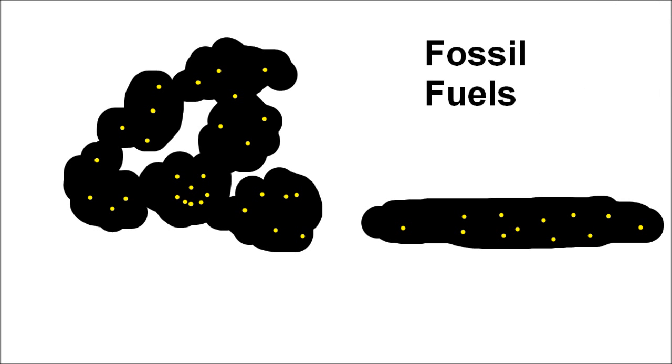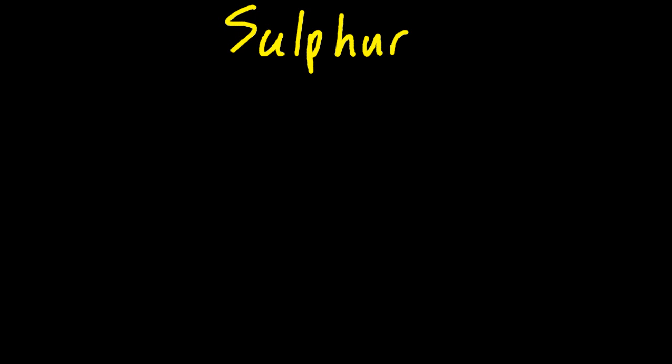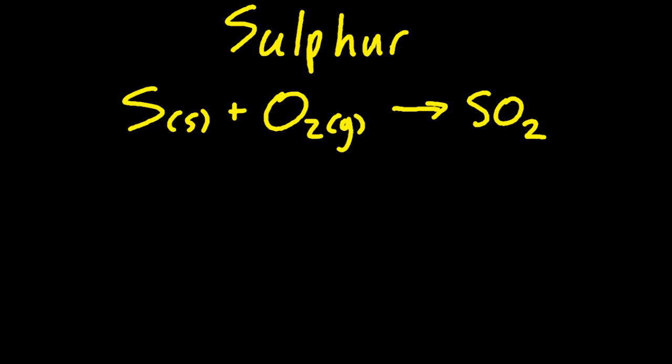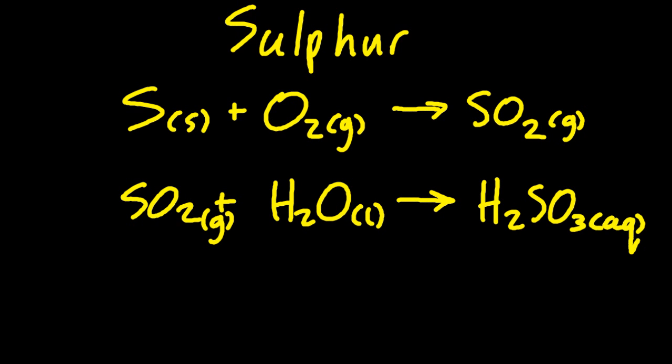So where does the anthropogenic, where does the man-made acid gases come from? Well, fossil fuels—burning coal and oil—they contain sulfur, and that releases and gets released when the coal or oil is burnt. Sulfur makes sulfur dioxide, an acidic gas. When that dissolves in water, you can make sulfurous acid, H2SO3—you have to memorize that. Now you've probably heard of sulfuric acid.